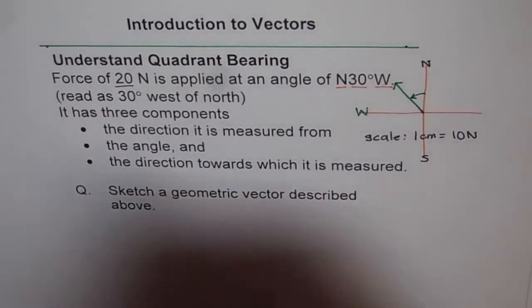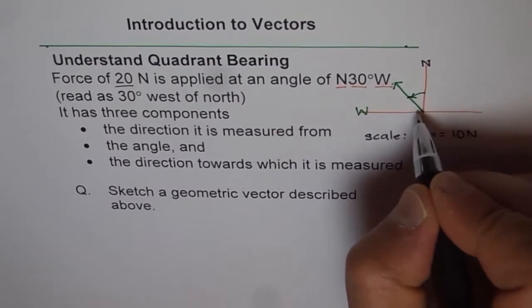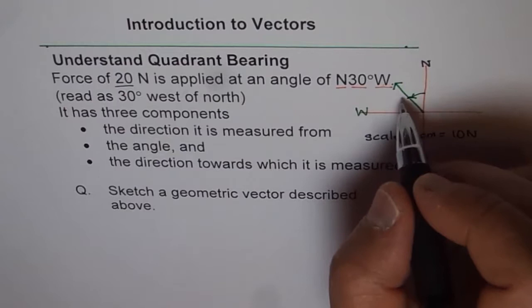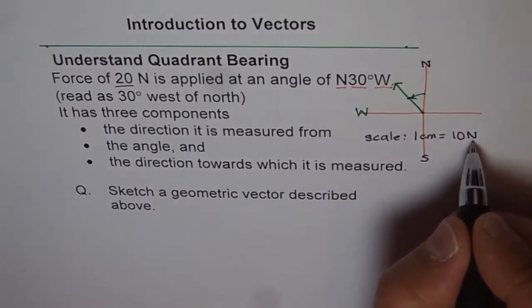So 20 newtons will be 2 centimeters. This is my 1 centimeter from here to here. And that is my second centimeter. So it becomes 20 newtons.